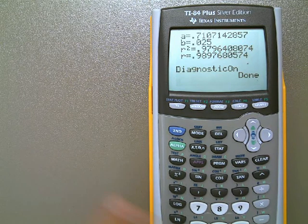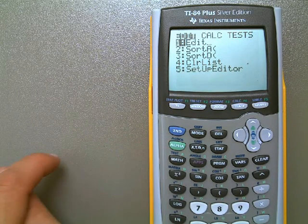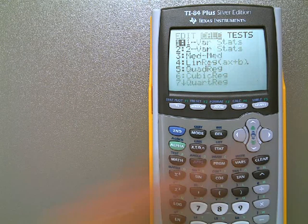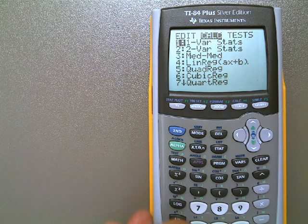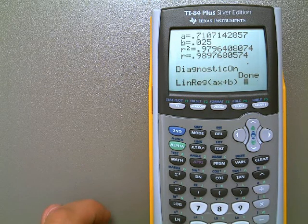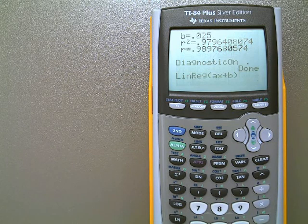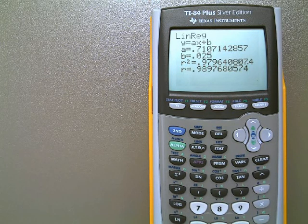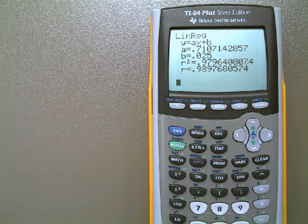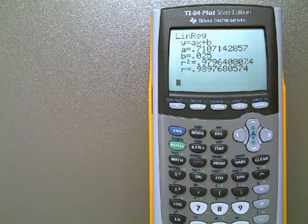Now, the next time you go in and do Statistics, and you go over to Calculate, and you hit 4 to calculate the linear regression, and you hit Enter to actually calculate the line, notice you get the same value, but this time, if you didn't have it before, you should have the R value. That's what we want.